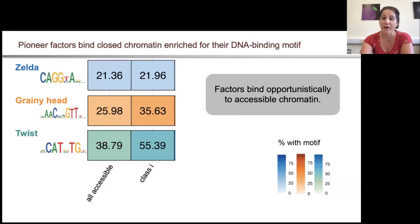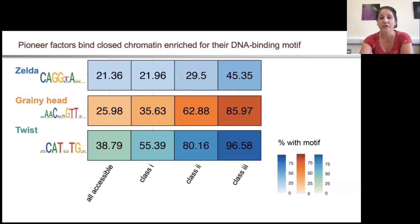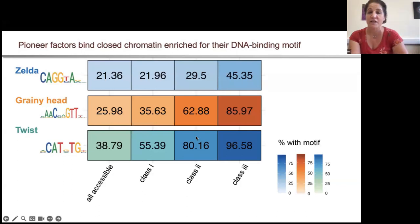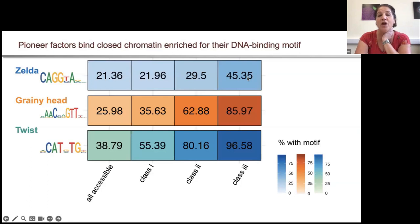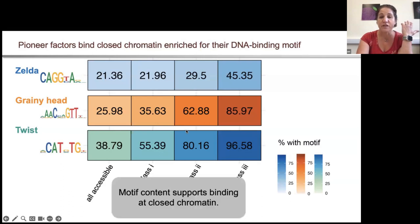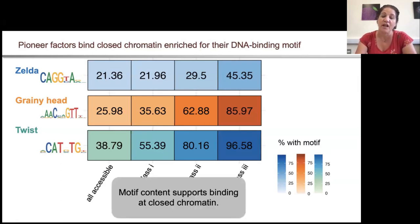When we looked at binding to closed chromatin and examined motif content, we could see that the closed chromatin was enriched for these sequence-specific motifs, and those that were opened were even more enriched than those that remained inaccessible. This really suggests that motif content supports binding to closed chromatin, and even more so supports pioneering and opening of the chromatin.